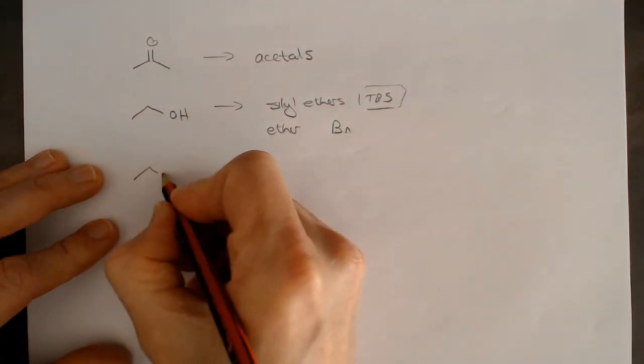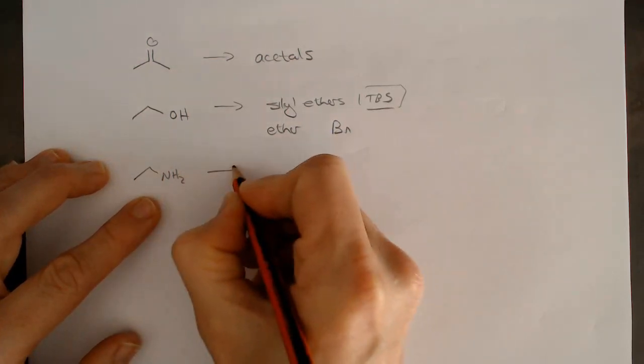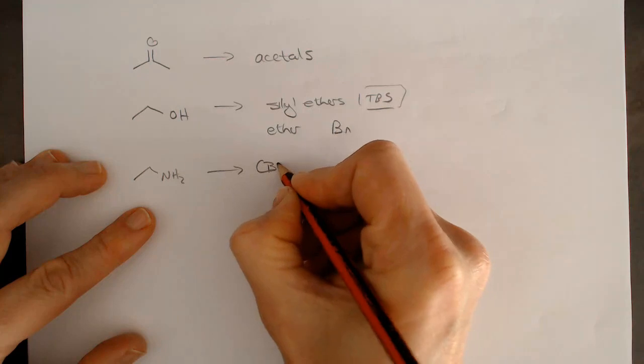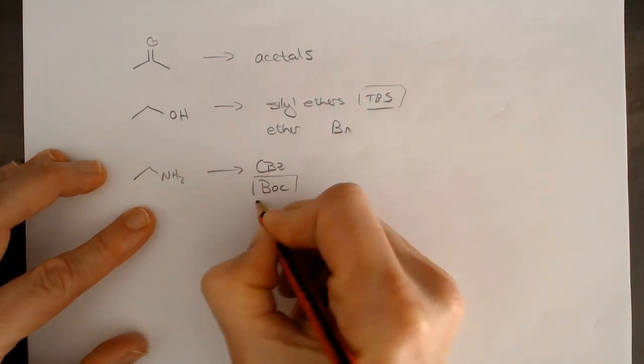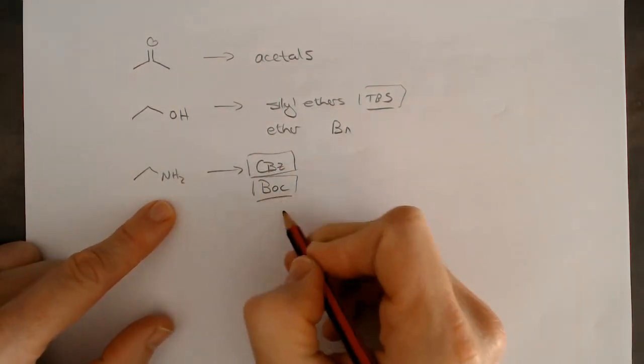Then we've got protecting groups for amines, primary and secondary amines. It doesn't matter. We've got the CBZ group and the BOC group as well. Both of them are carbamate protecting groups, and we've looked at that.